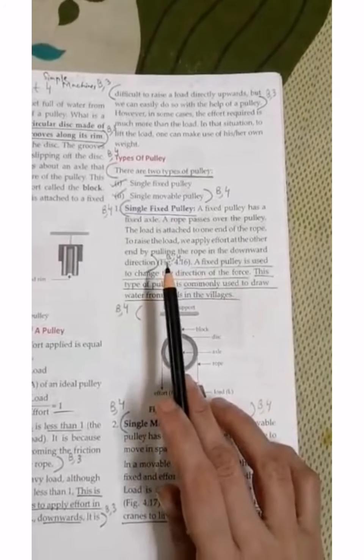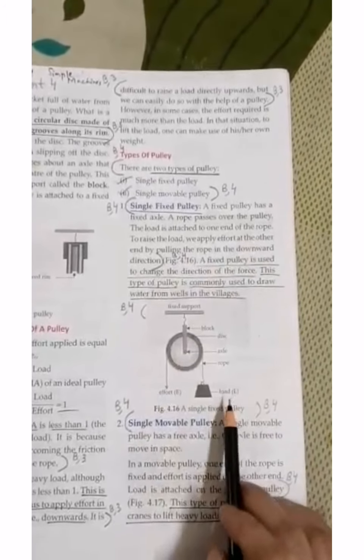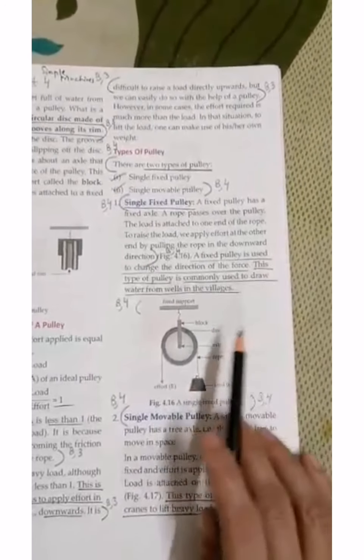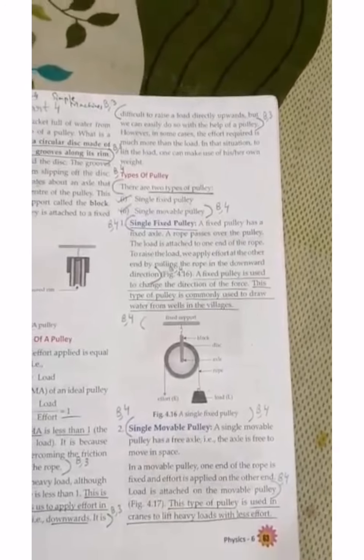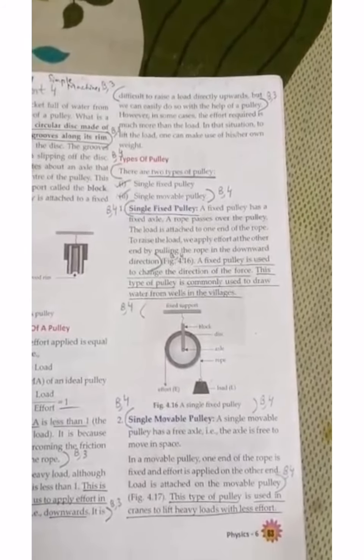There is a fixed axle. The rope is passed over the pulley. The load is attached at one end, and the other end is the effort. We use a fixed pulley when we change the direction of force. This is used when we remove water from the ground.